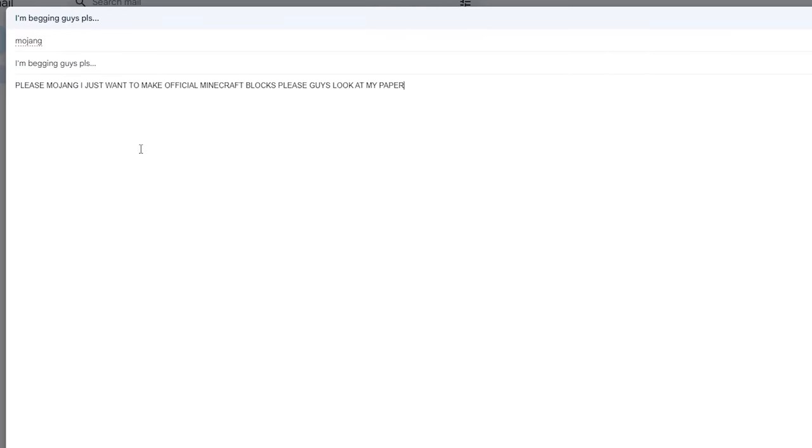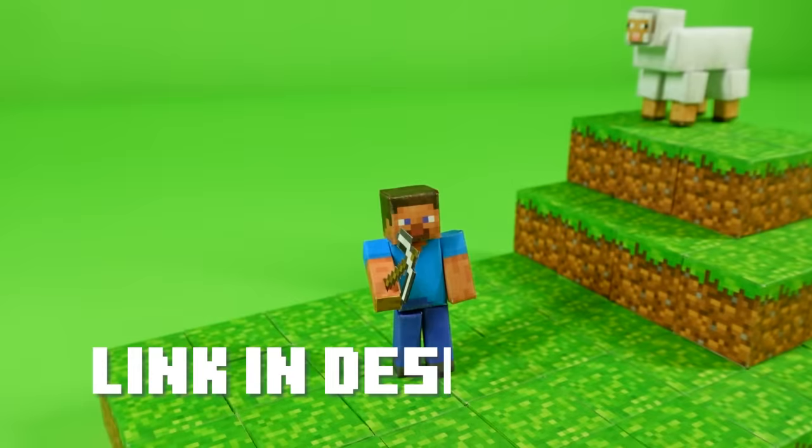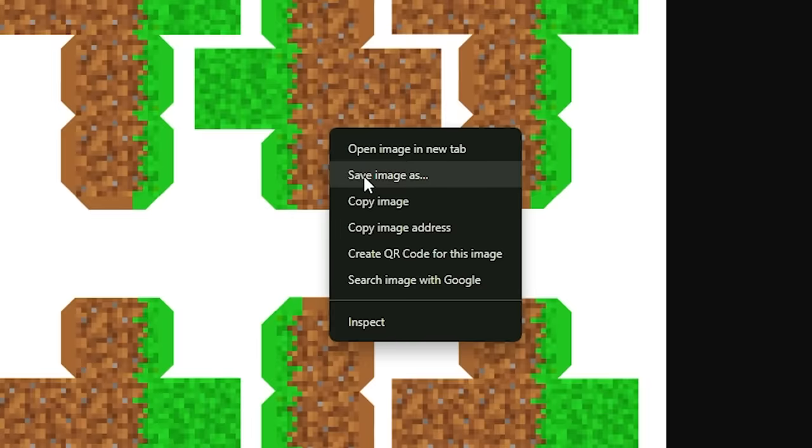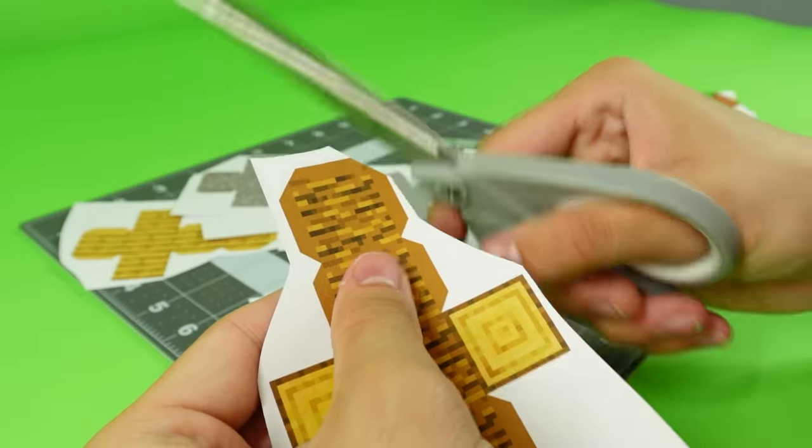Now currently, I'm trying to work with Mojang to give you guys some templates, but for now, there's only a couple I custom made on my website. Link in description. First, download a template. Print it out. Wait for it to dry a little bit. And cut out each block.